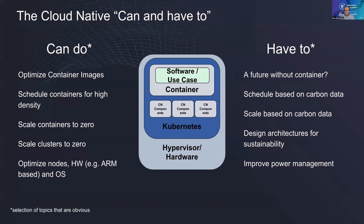Two things we need to seriously discuss: first, designing architecture for sustainability. This will come into conflict with security, performance, and high availability. Depending on security requirements, network communication and encryption create a lot of difficulties — and most of the time, these are quite unsustainable and inefficient.